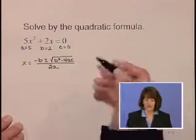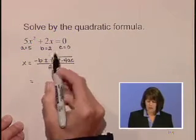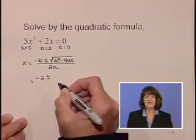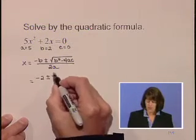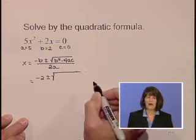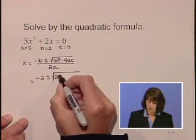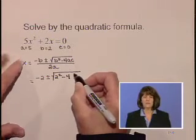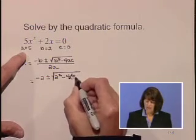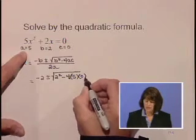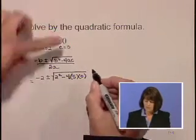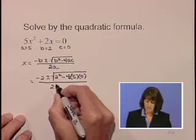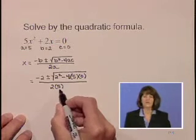Now let's substitute those values in. b is 2, so we have a negative of that 2 on top. Plus or minus the square root of 2 squared minus 4 times, we'll put that 5 in there for a, and 0 in for c. All over 2 times a, which is 5.